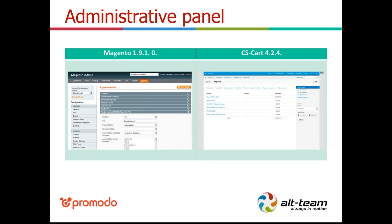Now let's look at the administrative panel. In Magento there are two types of menus in the back-end: horizontal and vertical. It looks very complicated for many people in the beginning and shop owners become lost at first — it usually takes five to six days to get used to Magento. CS-Cart looks much simpler and needs less time to understand the back-end logic. In two or three days you will manage the system without any tips.